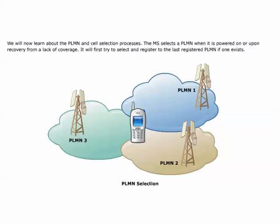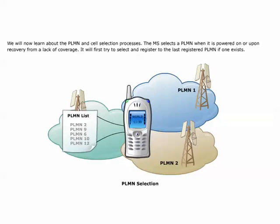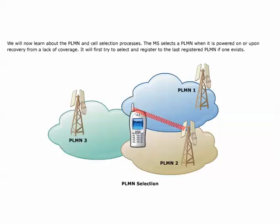We will now learn about the PLMN and cell selection processes. The MS selects a PLMN when it is powered on or upon recovery from a lack of coverage. It first tries to select and register to the last registered PLMN, if one exists. If a registration on a PLMN is successful, the MS shows this PLMN on its display, the registered PLMN, and it is now capable of making and receiving calls. The MS normally operates on its home PLMN. Another PLMN may be selected if, for example, the MS loses coverage. The MS will register on a PLMN if the MS finds a suitable cell to camp on and if a location updating request is accepted. Registration has to be successful in order for the MS to be able to access that network.